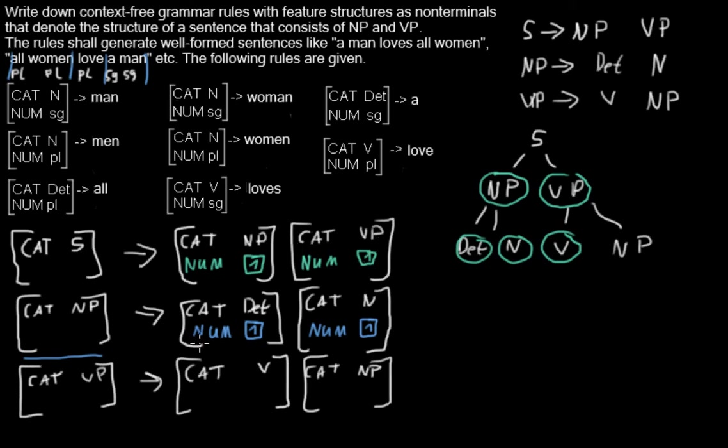Now I can go to the VP and here, if you imagine that whatever is put in here is passed down to that one, I will get a numerus here and then I say I want the verb also to have the same numerus. So now it's passed down to the verb and I have exactly what I want.